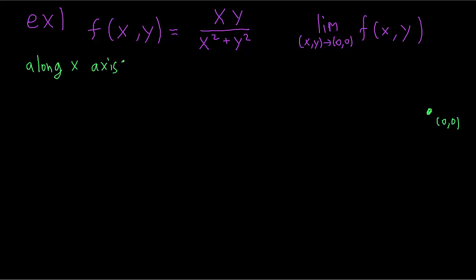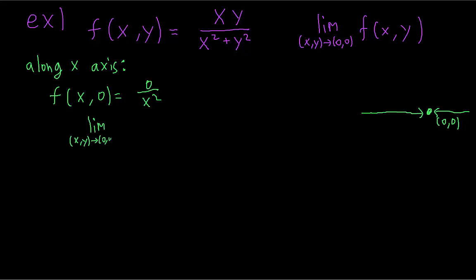First, let's try to approach along the x-axis. Remember, the domain of this function is in the x, y-plane. Approaching along the x-axis would look something like this, if this is a picture of our domain. Along the x-axis, the y-value is always 0. If we plug in 0 for y in the function, we get this. The limit as x, y approaches (0, 0) of this function is 0. So we have 0 as a possible candidate for the limit of this function.